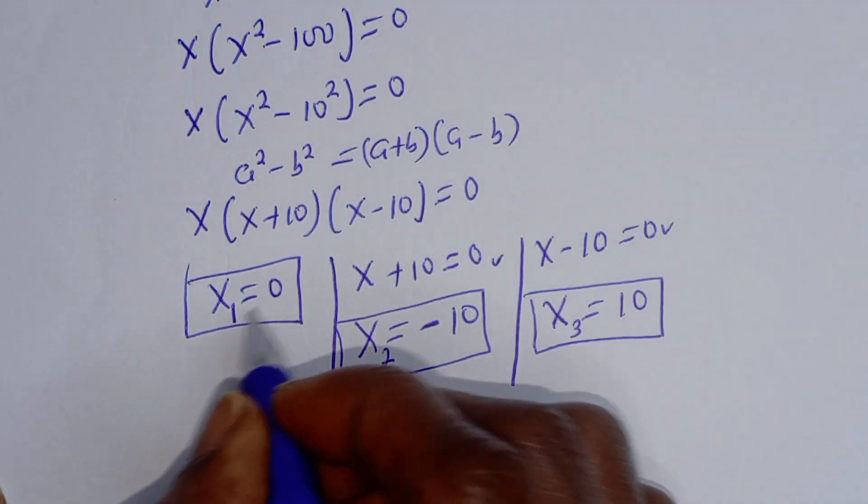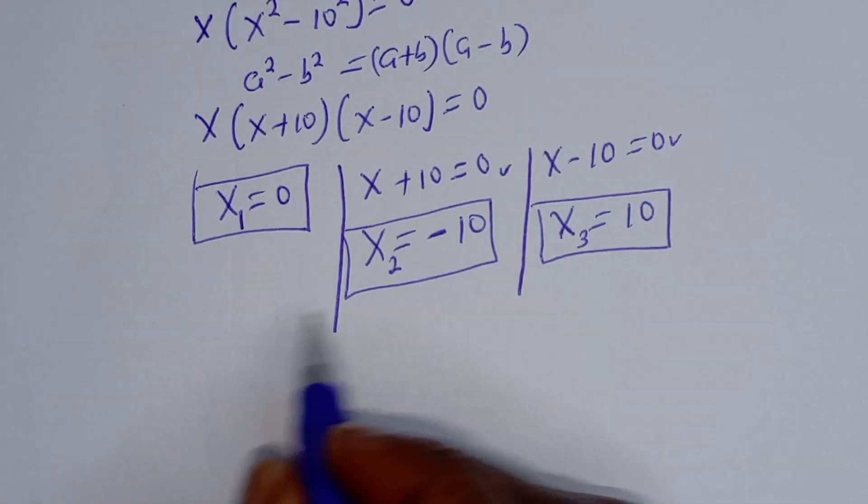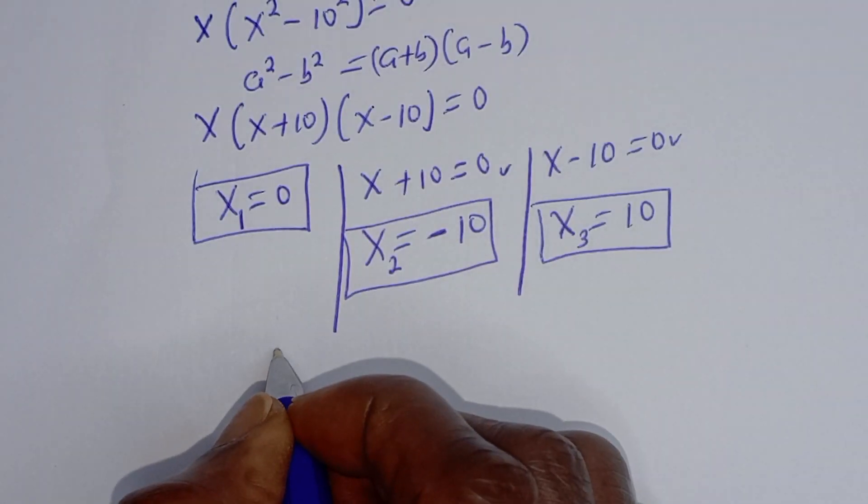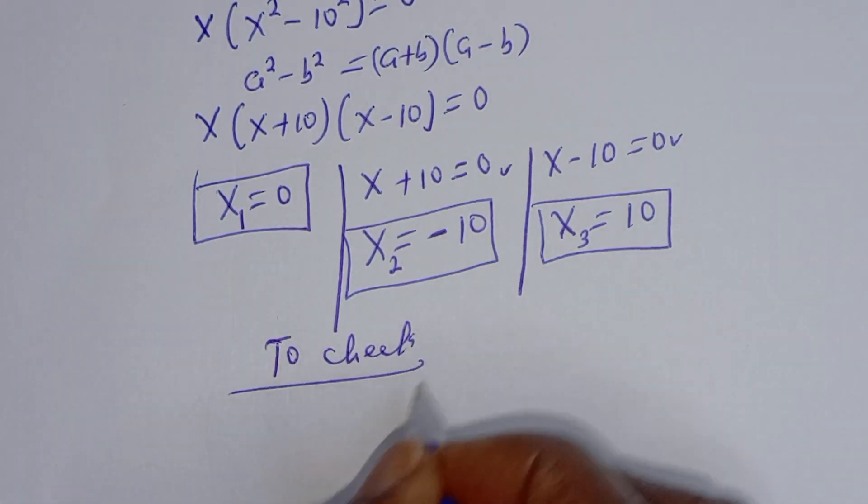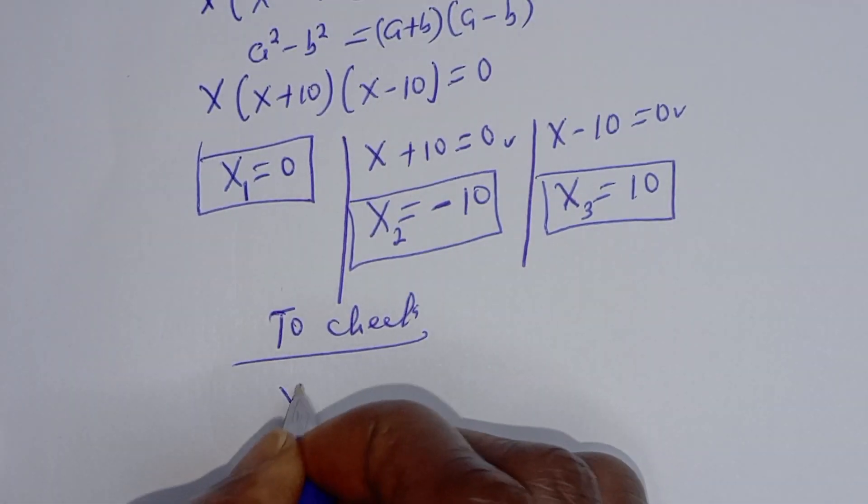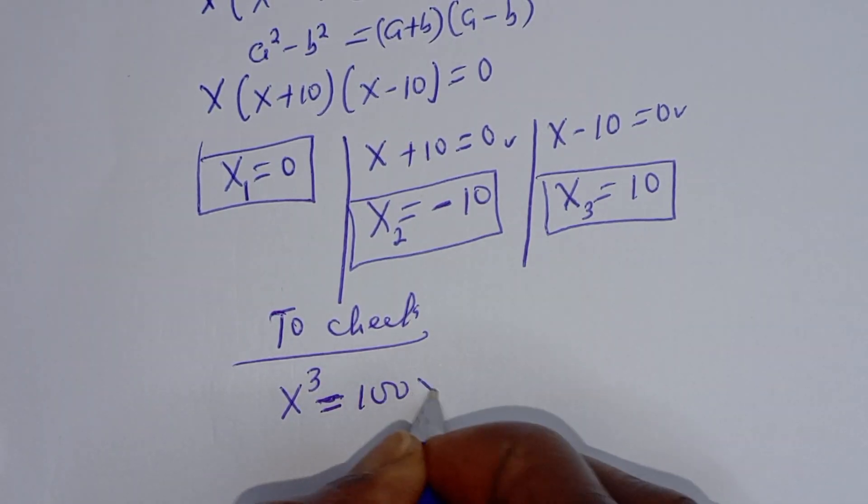And this is the final answer. We can check to confirm if our answer is right or wrong. To check, we have the given equation x raised to power 3 is equal to 100x.